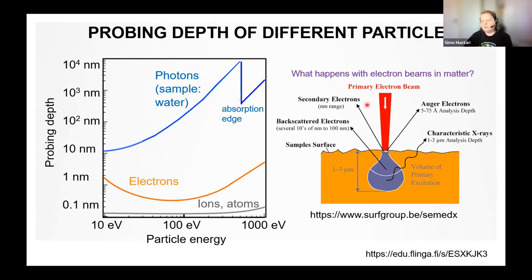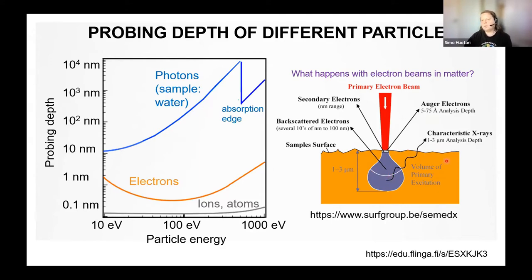If you use an electron probe, you have a primary electron beam hitting a surface. Many different interaction processes can happen. Scattered or secondary electrons come from the nanometer range. Auger electrons come from a few nanometers — Auger analysis depth. But if you excite with electrons and look at X-rays coming out, the analysis depth is in the range of micrometers, because X-rays can escape from deeper in the interaction volume. Different combinations are possible — something to bear in mind when planning an experiment to choose which probes to use.